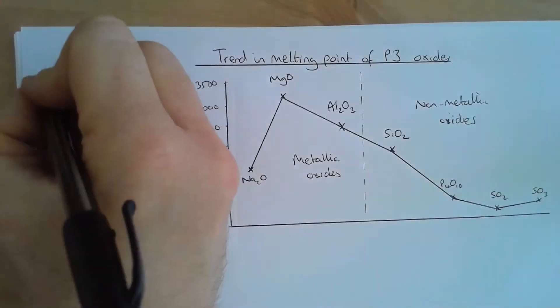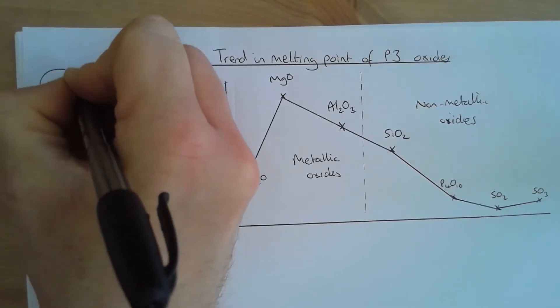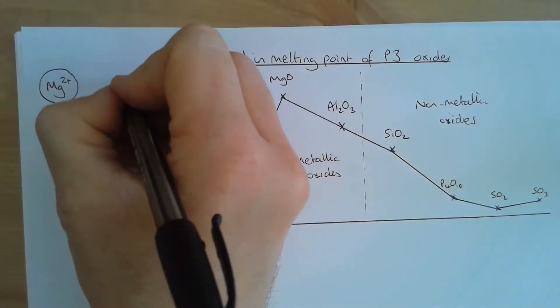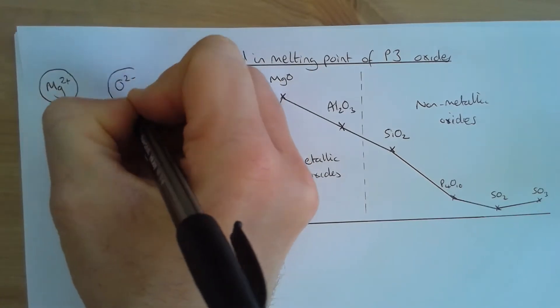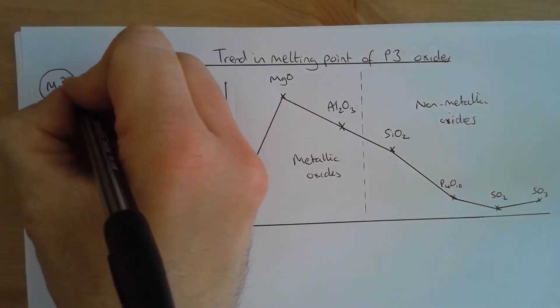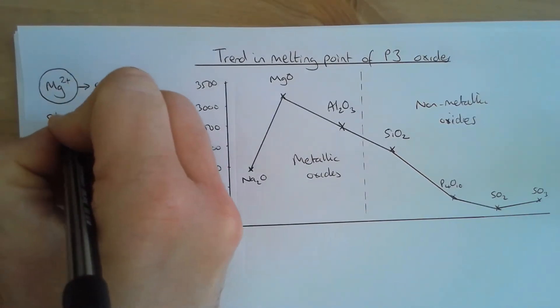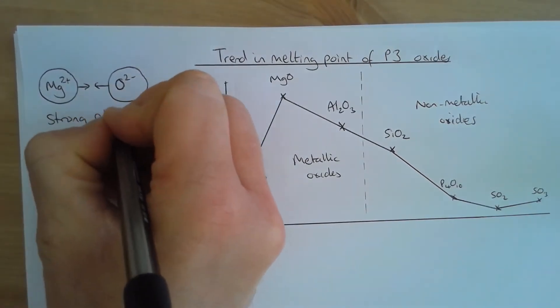Well, they're made of ions and it's easiest to talk about the magnesium oxide. So we've got an Mg2+ ion and an O2- ion. So that's our simplest ratio of ions. Obviously, don't forget that we're actually talking about molar quantities of ions. And there are going to be extremely strong electrostatic forces between the ions.